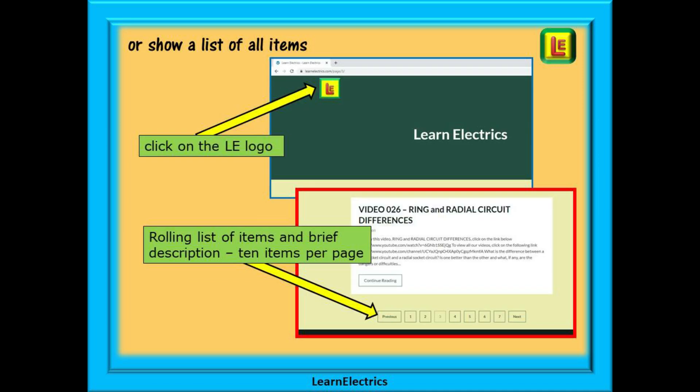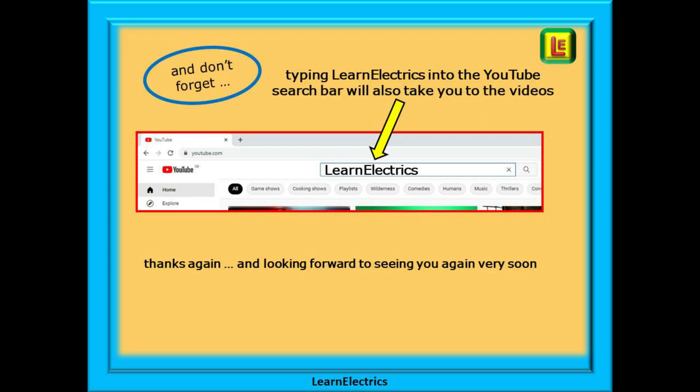Or you can browse through the list of all the available items and videos. To do this click on the LE logo on the top left of the home page and all our items and videos will be shown. There will be 10 items shown on each page and at the bottom of each page is a page selector. Page 2, 3, 4 and so on that will bring up the next 10 items or videos in the list. And don't forget that you can also type in LearnElectrics or one word into the YouTube search bar to go directly to our channel at any time from any computer.